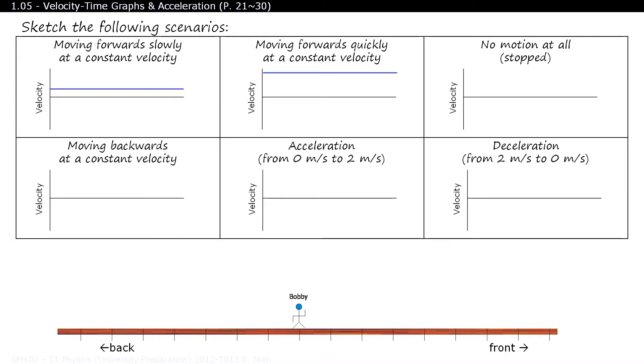Third example. Bobby, can you just stay put? We'll still see a horizontal line produced, but this time the y-intercept is at 0, and that's because when Bobby is stationary, his velocity is at 0.